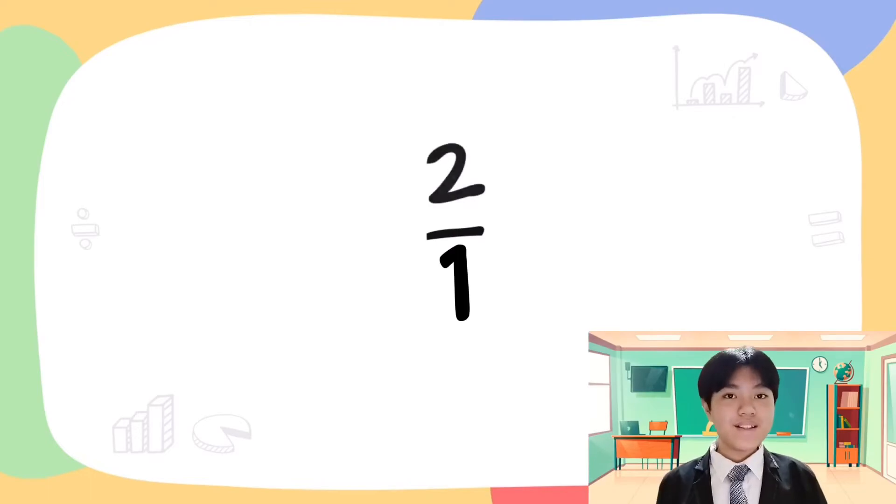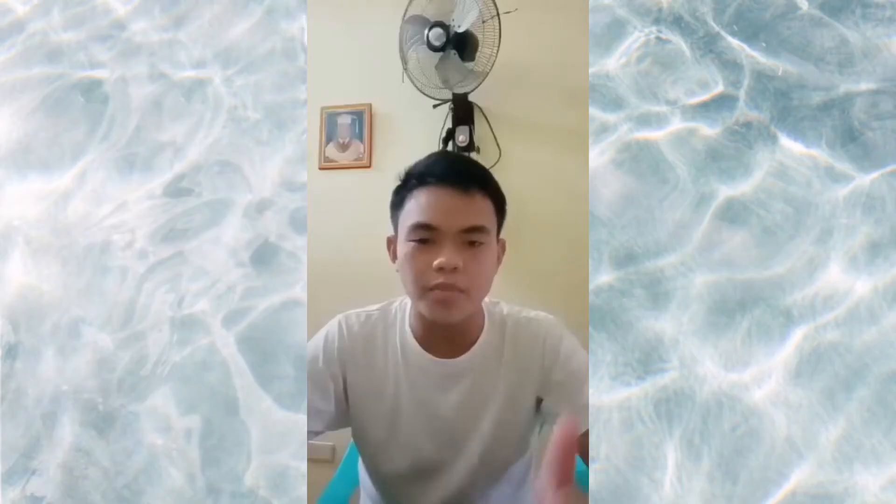Correct, Denise. I have a question, teacher. How will we know if it is a simplified form already? We will know it if the number can't be reduced to the lowest term, since 2 over 1 is already the simplest form that we can get. Students, do you have any other questions? None na po.